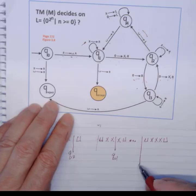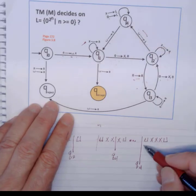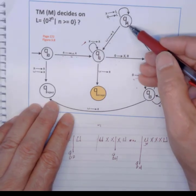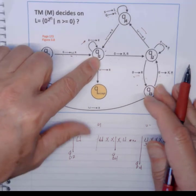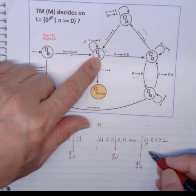And I'm still at Q4. When I see a blank, do I have a transition to Q4 anywhere else? Yes, I do. I have it to Q1. And I move right. So I move right here. Here's X, X, X, a blank. And I am now at Q1.